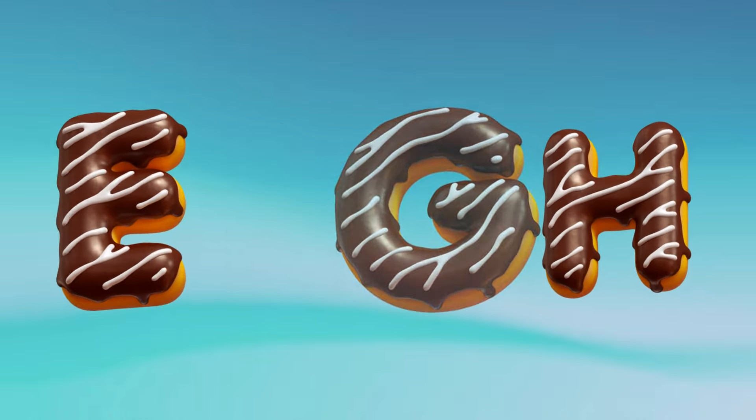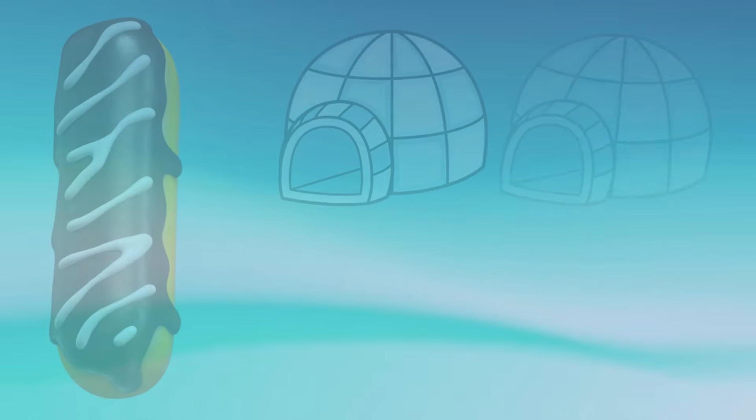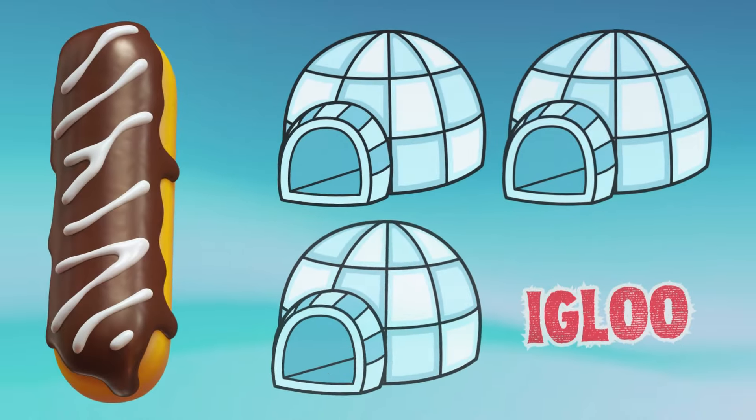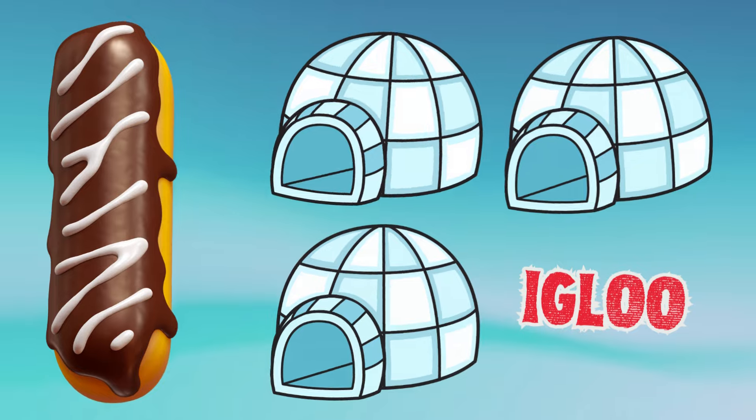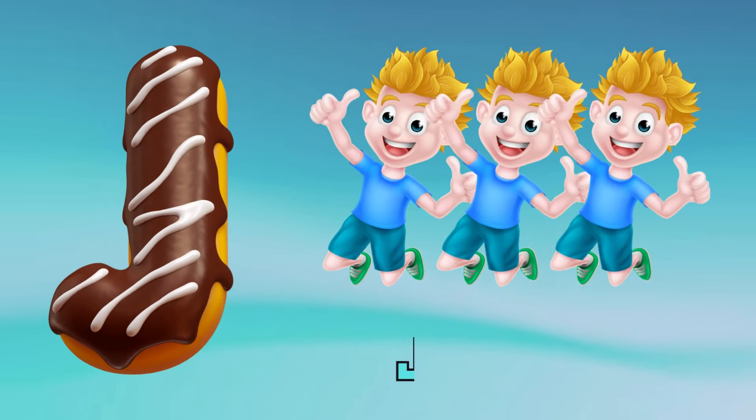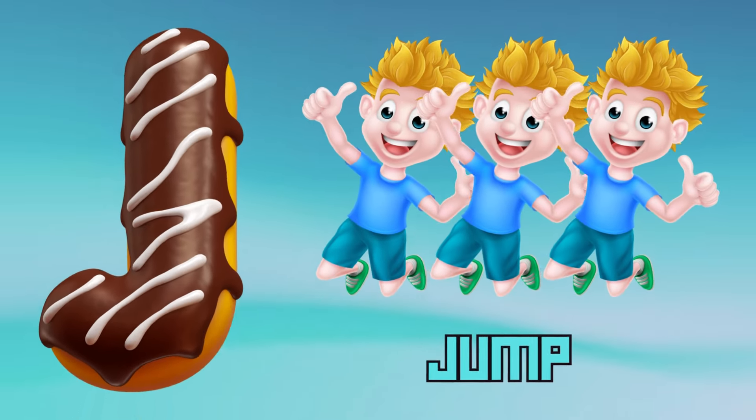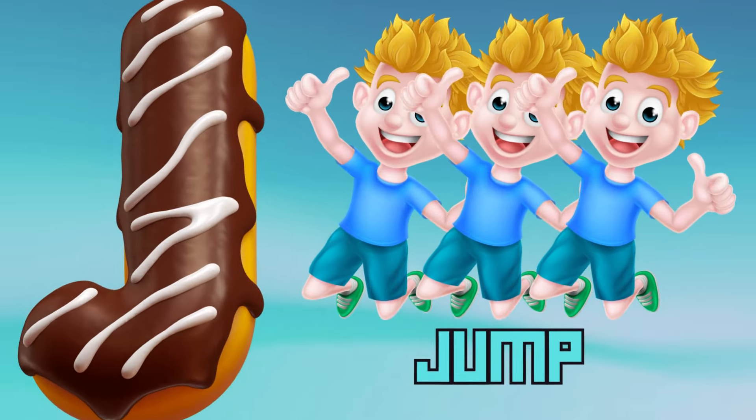I is for igloo, i-i-igloo. J is for jump, j-j-jump.